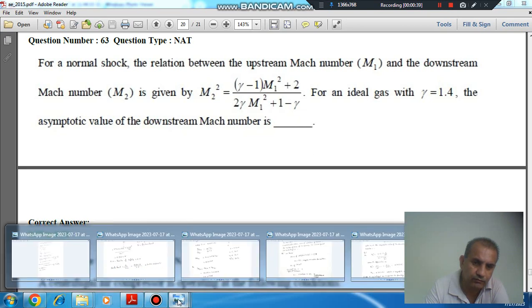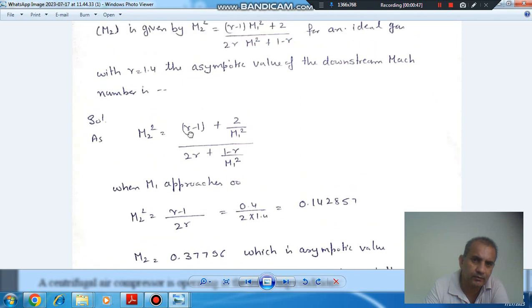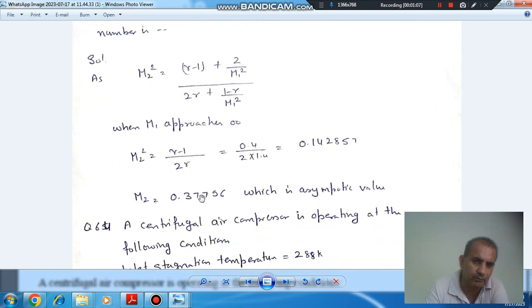This value can be represented by taking M1 equals infinity. If we modify the relation by dividing it by M1 square, we can modify this equation which will be gamma minus 1 plus 2 by M1 square plus 2 gamma plus 1 minus gamma M1 square. Taking M1 as infinity, we get M2 as 0.2771.